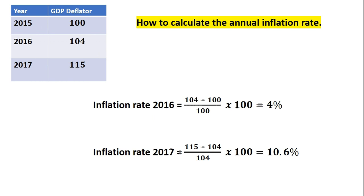To calculate the annual inflation rate for 2017, we again use the percentage change formula. We start with the ending value of 115, subtract last year's value of 104, and divide by last year's GDP deflator of 104. Multiplying all of that by 100, we get an answer of roughly 10.6%. So prices rose in 2017 at a faster rate than in 2016.